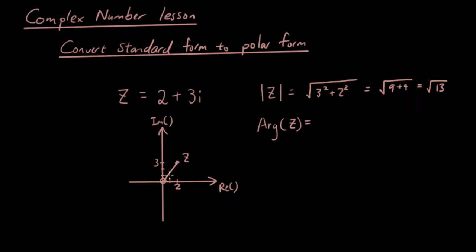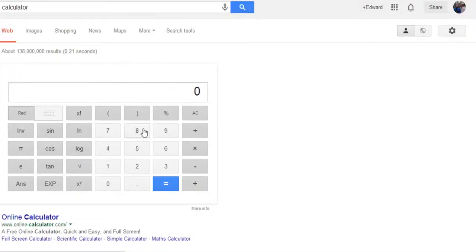The argument is the angle that this line makes with the horizontal, and it is found by doing inverse tan bracket opposite over adjacent. So that's inverse tan 3 over 2. If you put that in your calculator, put it on degrees, and then you go inverse tan bracket 3 over 2.